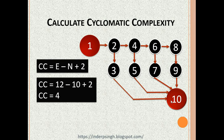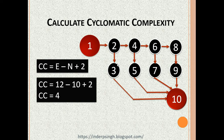We have the cyclomatic complexity formula: cyclomatic complexity CC equals E minus N plus 2. E is the number of edges — these are the edges from 1 to 2, 2 to 4, 4 to 5, and so on. The edges represent the control flow between nodes. N is the number of nodes: 1, 2, 3, 4, 5 through 10. The nodes represent expressions or statements that need to be executed.